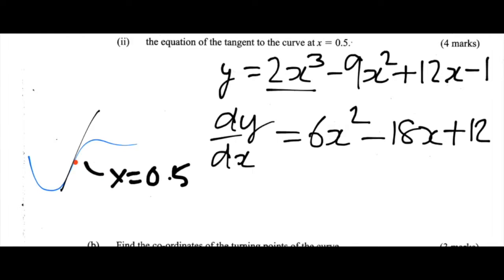We're going to have to find out what dy by dx is, or the first derivative, at the point where x is equal to 0.5. That's this point marked by the red dot. So we're going to substitute x is equal to 0.5 into dy by dx. When we do that, we get 6 multiplied by 0.5 squared minus 18 times by 0.5 plus 12.